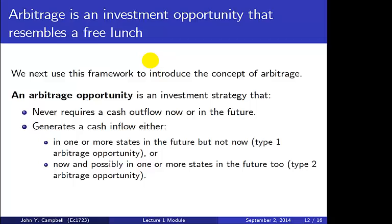An arbitrage opportunity is a wonderful deal if you can get it — good work if you can get it. It's an investment strategy that never requires a cash outflow, either now or in the future. You will receive a cash inflow in one of two circumstances: either you get cash in one or more states in the future but nothing now — that's a type one arbitrage — or you get cash now and possibly in one or more future states too, which is a type two arbitrage.